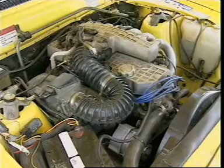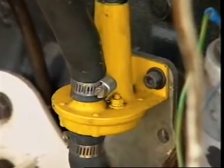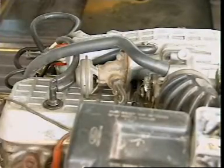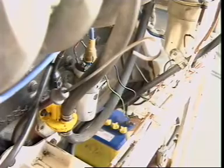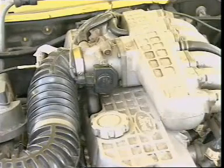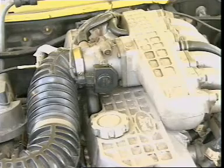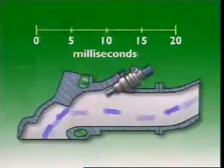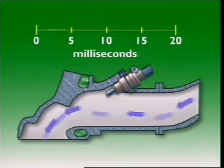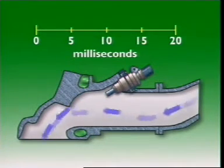The extra air needed for a cold engine can come from an auxiliary air device. This one has a connecting hose from the intake air side to its controlling passageway and a return hose to the plenum chamber. It bypasses the throttle plate when in operation to provide the extra air. The control unit reacts to this additional air by metering additional fuel, making more air-fuel mixture available during the warm-up period.